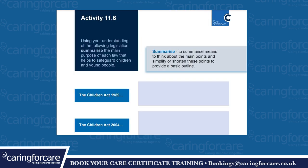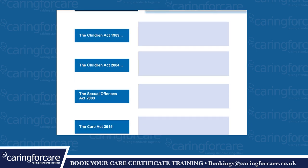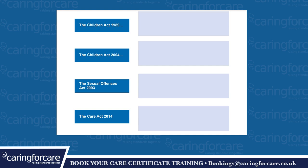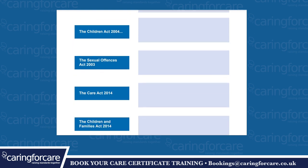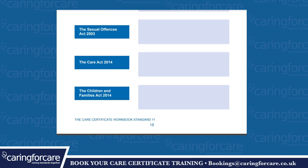Activity 11.6. Using your understanding of the following legislation, summarise the main purpose of each law that helps to safeguard children and young people. To summarise means to think about the main points and simplify or shorten these points to provide a basic outline. The Children Act 1989, the Children Act 2004, the Sexual Offences Act 2003, the Care Act 2014, and the Children and Families Act 2014.